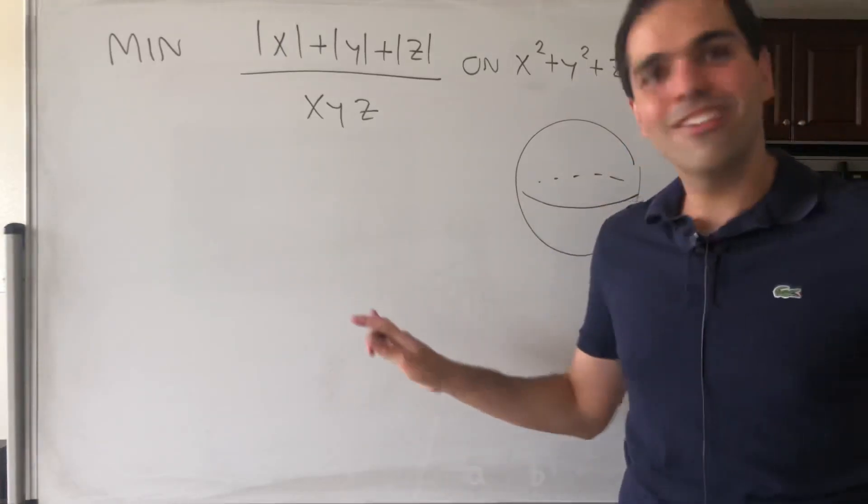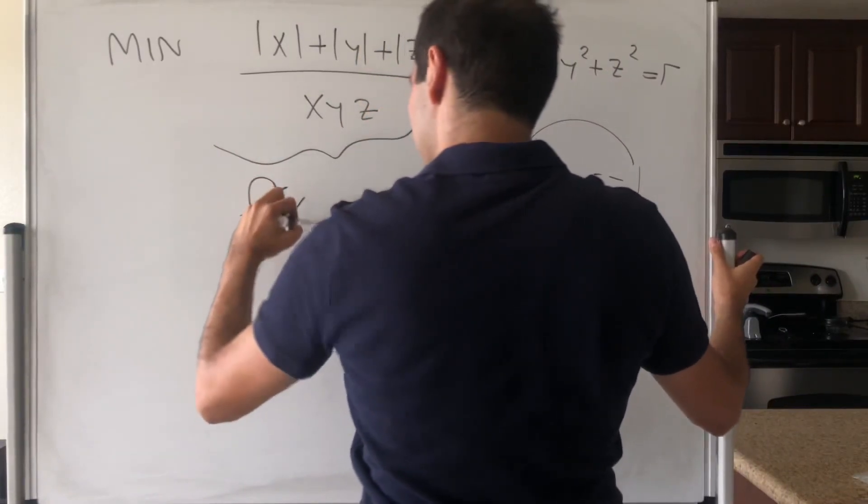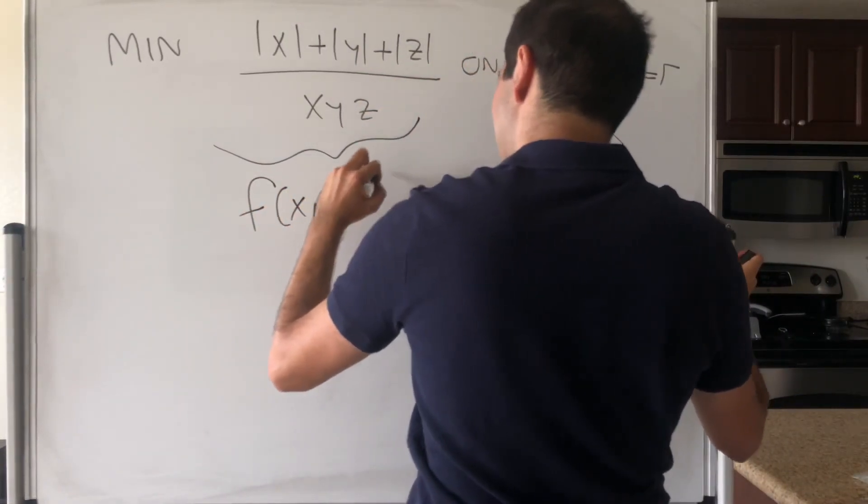And again, no derivatives, no Lagrange multipliers. It's really, really neat. So let's call this function f of x, y, z.